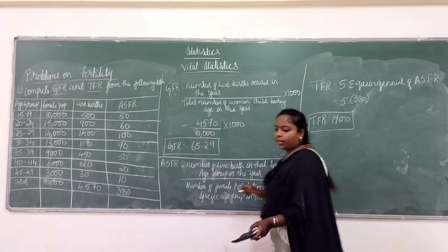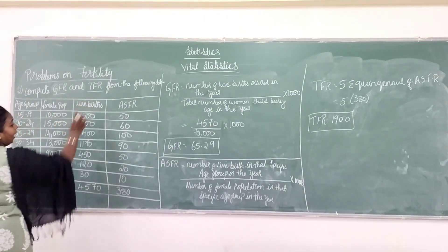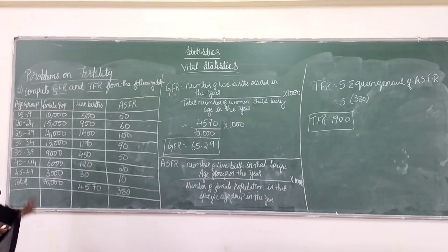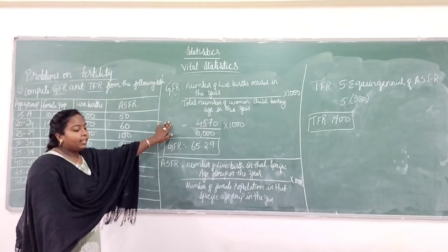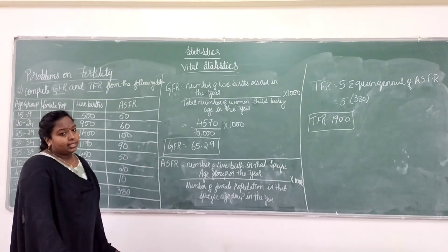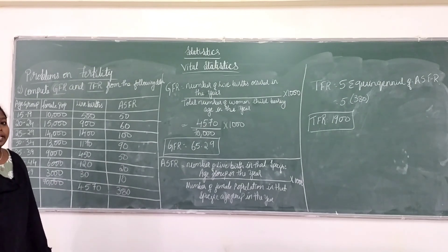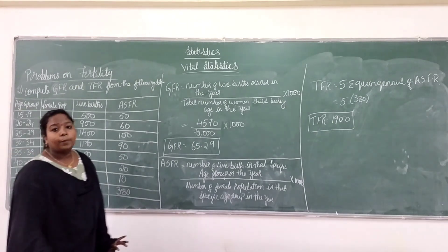Here they have asked us to find out two properties: one is GFR, another is TFR. First find out general fertility rate, then find out ASFR, then find out TFR. Like this, your fertility topics will end. Tomorrow we will see another topic. Thank you, students.